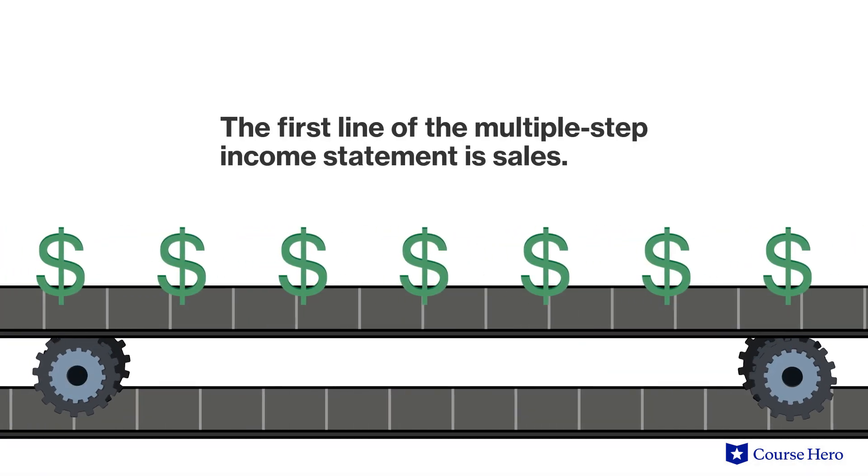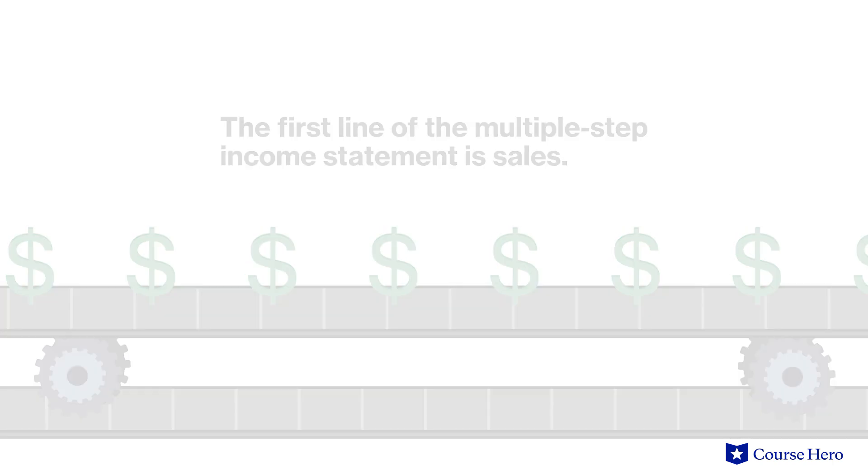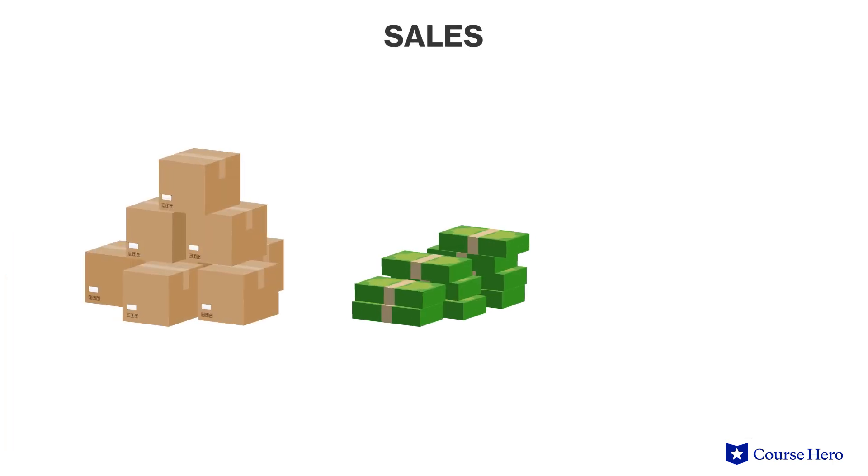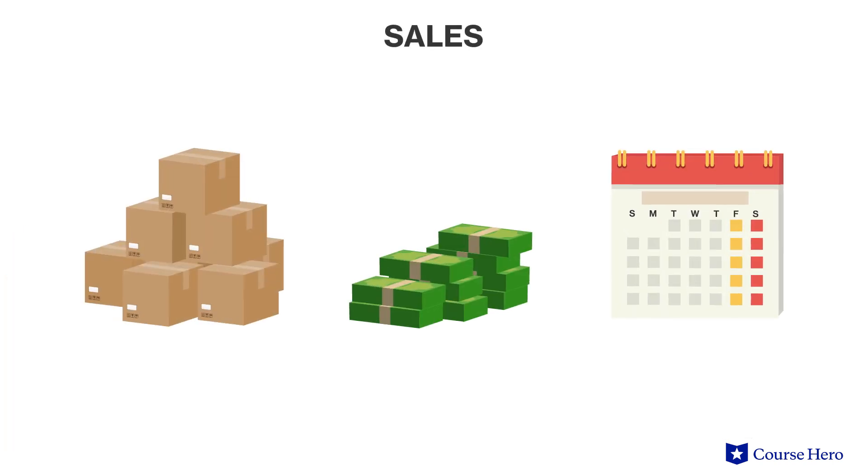As the name indicates, several steps are involved in preparing a multiple-step income statement. The first line is sales, which includes the revenue a company generates during the financial statement period. For example, if a company sells one hundred thousand dollars worth of products during the year, that amount would equal sales. After sales, we will find sales returns and allowances.